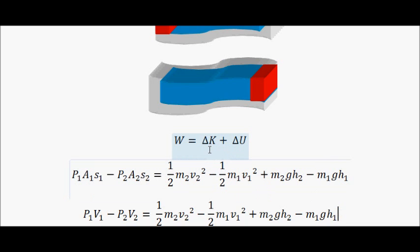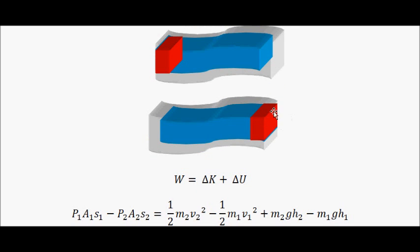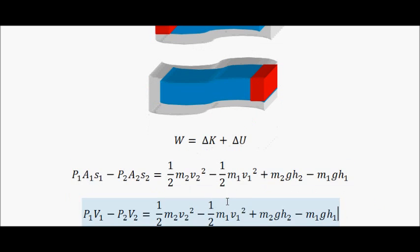And then on the other side, we've got a change of kinetic and potential energy. We're starting with the subscript 2 rather than the subscript 1 to represent that we're looking at a change of kinetic energy. So the kinetic energy at the end minus the kinetic energy at the beginning. So the kinetic energy of this red bit minus the kinetic energy of this red bit. Same with the gravitational potential energy. M2GH2 minus M1GH1.